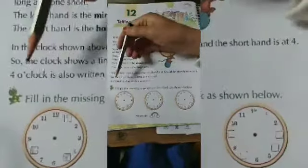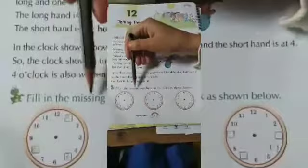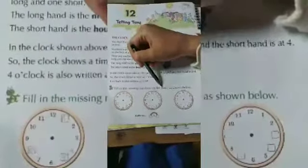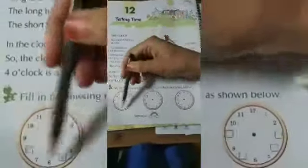So students, let's do one question. Fill in the missing numbers on the clock as shown below. Now, look at this clock.